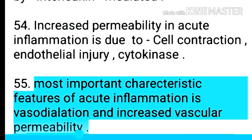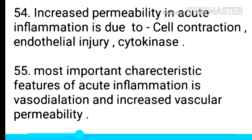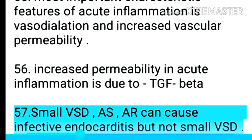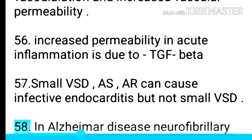Point 56: Most important characteristic features of acute inflammation are vasodilation and increased vascular permeability. Point 57: Increased permeability in acute inflammation is due to TGF-beta. Point 58: Small VSD, AS, and AR can cause infective endocarditis, but not small VSD.